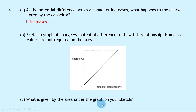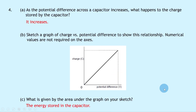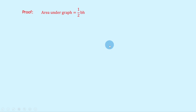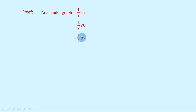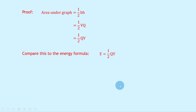Part C then says what is given by the area under the graph on your sketch? This comes from the theory video on energy stored by a capacitor — the area under the graph gives us the energy stored in the capacitor. The proof is that the area under the graph equals a half times the base times the height, which is a half times V times Q, since V is our base on the x-axis and Q is our height on the y-axis. Rearranging to a half QV and comparing to our energy formula E equals a half QV, we can see the energy equals the area under the graph.